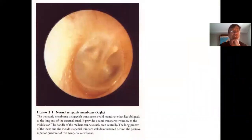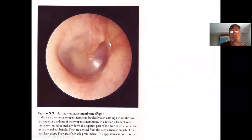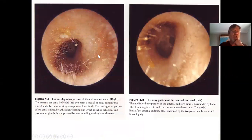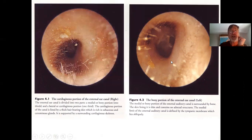Looking at eardrum photos: a normal eardrum with the cone of light at five o'clock confirms it's the right ear. You can identify the manubrium of the malleus, umbo, annulus, long process of the incus, pars tensa, and pars flaccida. In the outer half of the ear canal, cerumen and hair grow; in the inner half toward the eardrum, there is no hair and no wax.